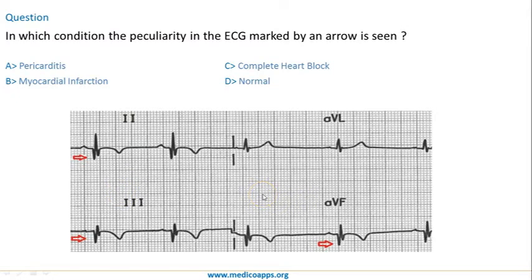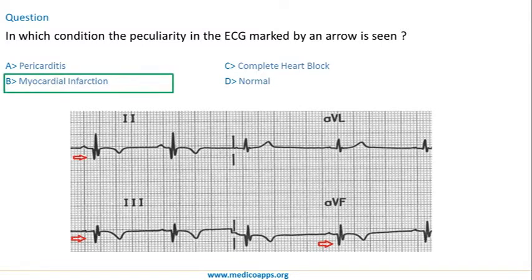Leads 2, 3, and AVF represent the inferior leads. There is also a T wave inversion in these three leads, though the T wave inversion is not seen in AVF. Both findings — the deep Q wave and T wave inversion — correspond to the correct answer: myocardial infarction.